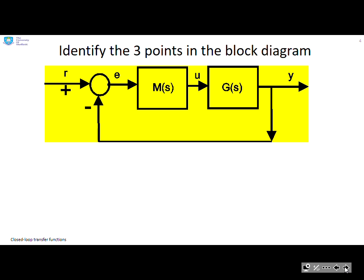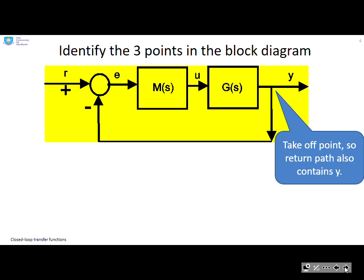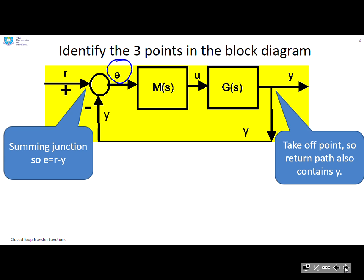Now, let's identify those three points in this block diagram. You can see a takeoff point there, which means that this line going backwards must also contain y. You can see a summing junction there, which tells you that the signal e has got to be r minus y.